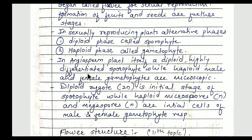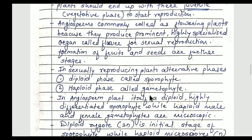In angiosperm plants, the plant itself is a highly differentiated diploid sporophyte — the leaves, stem, vessels, and all cells of the plant are organelles having the sporophyte. The haploid male and female gametes are microscopic in the plant structure. The diploid zygote is the initial stage of the sporophyte. The sporophyte produces haploid microspores and megaspores — microspore is the male gamete while megaspore is the female gamete. Microspore and megaspore are the initial cells of the male and female gametophyte respectively.